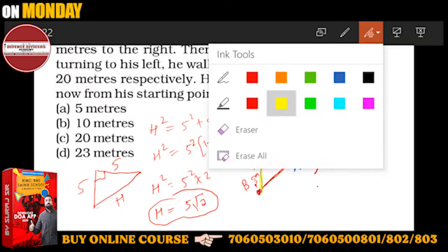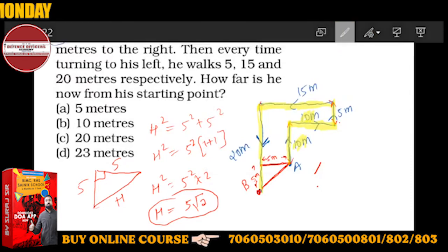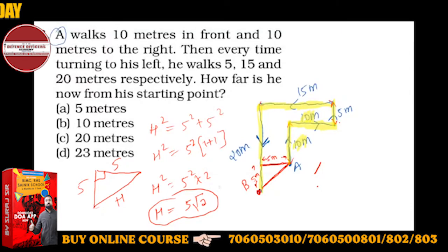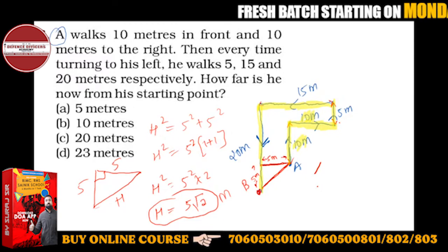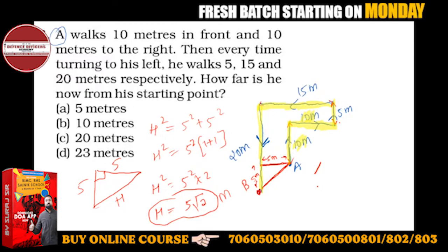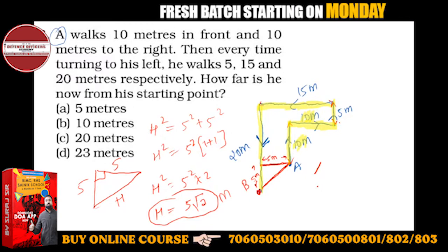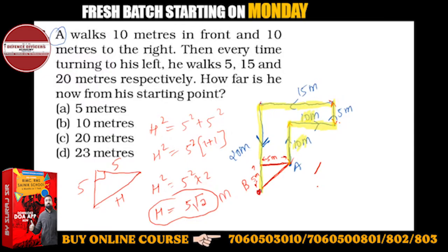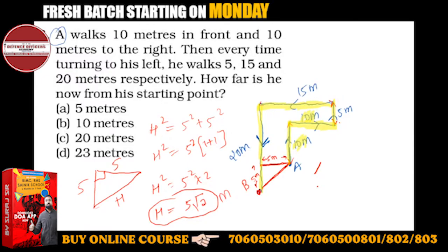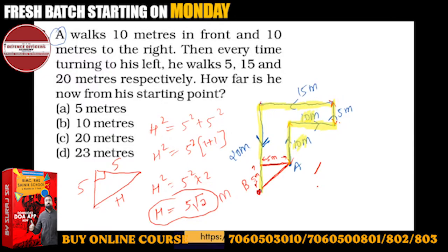The options given here are wrong. In some questions the options may be incorrect — square root of 50 is the right answer, which is nothing but 5 root 2.